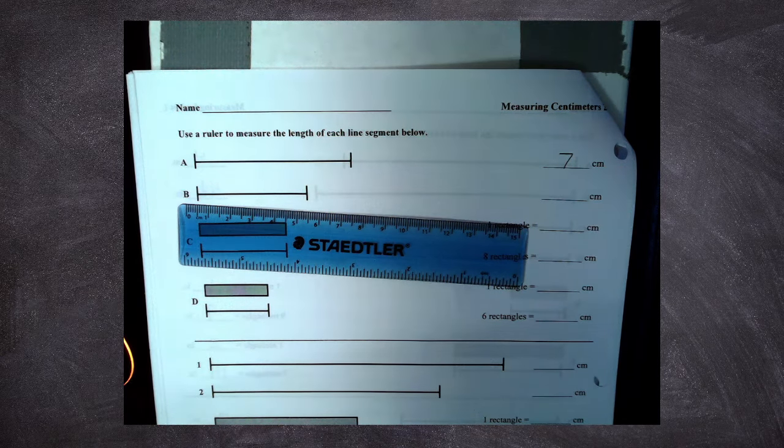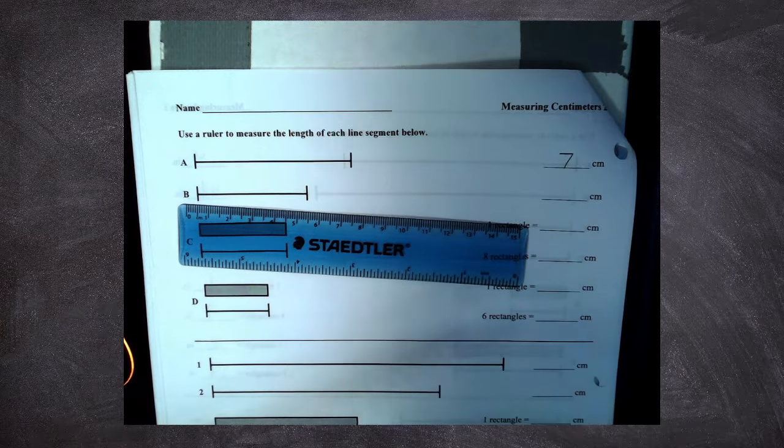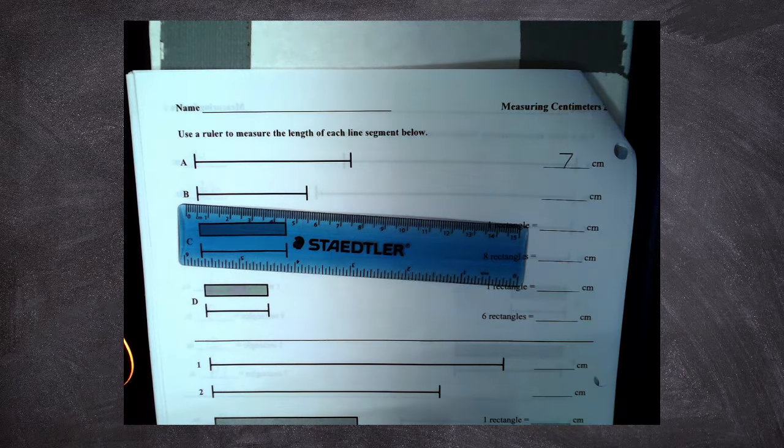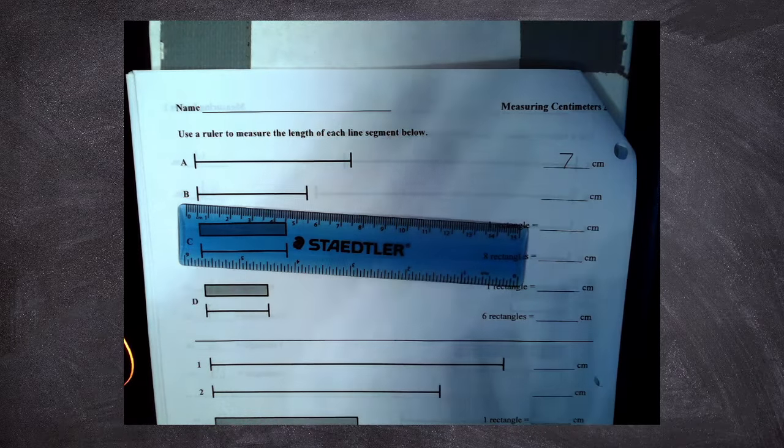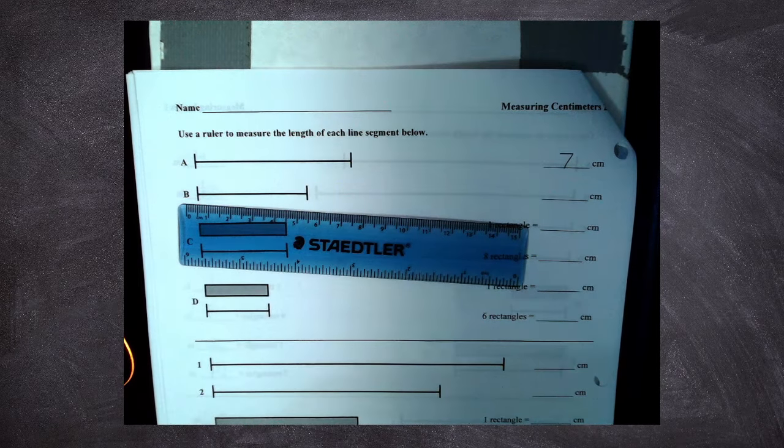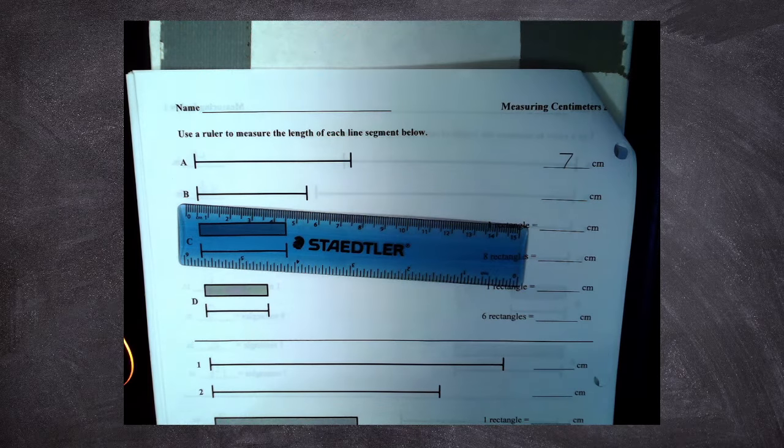If you look in your math packet, Haley, you've got that paper that has a ruler. One side of it has inches, one side of it has centimeters. So if the ruler you're using doesn't have centimeters, go find that paper in your math packet. We'll have both.